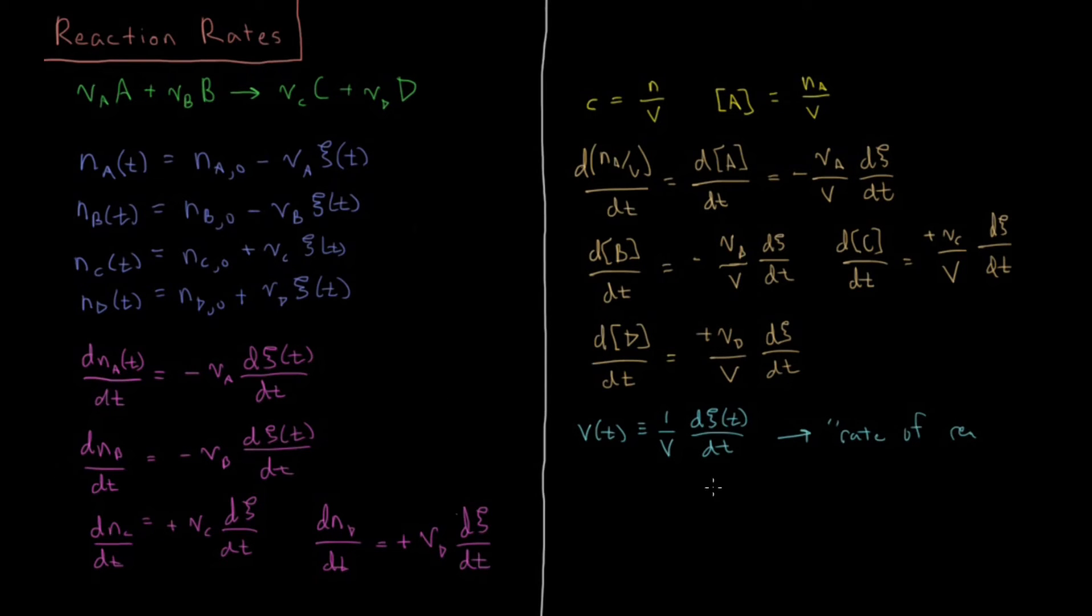So we take our extent of reaction and we differentiate it with respect to time, and then divide by volume, and that gets us in terms of concentrations rather than number of moles. And everything is great, and we have defined what we have as our rate of reaction there. And just so that we are clear, I'm going to write down that this C is called the extent of reaction, as defined at the beginning of the equilibrium playlist.